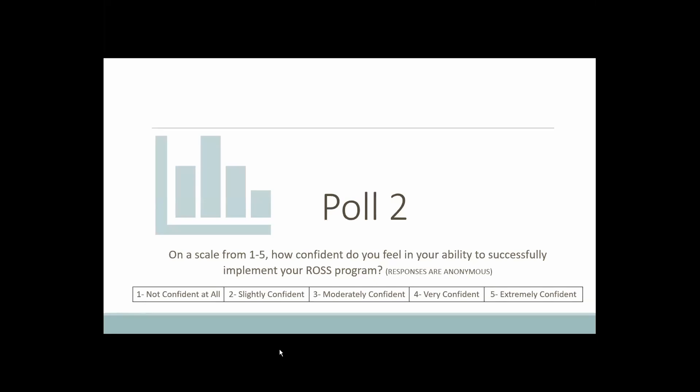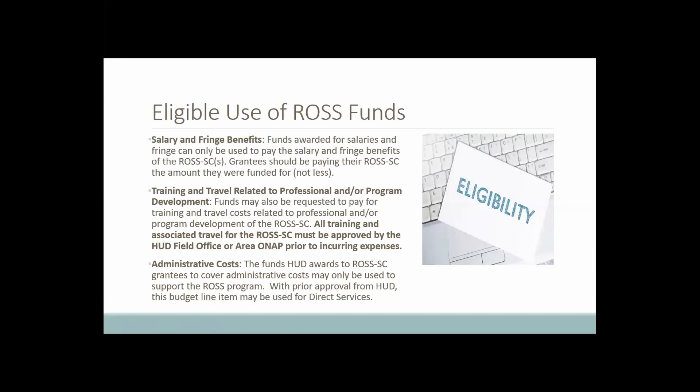Now we want to transition to thinking about eligible use of funds for your Ross program. This is something very important to us because we really want to make sure that you are not only staying in compliance with your grant, but also using your funds in a way that's going to maximize the impact you can have in your community. For the Ross program there are three budget line items: salary and fringe benefits, training and travel related to professional development and program development, and administrative costs.